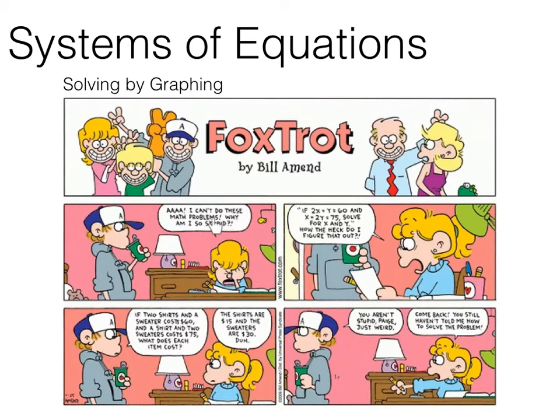I can't do these stupid math problems. If 2x plus y equals 60 and x plus 2y equals 75, solve for x and y. How the heck do I figure that out? This is her brother. If two shirts and a sweater cost $60 and a shirt and two sweaters cost $75, what does each item cost? The shirts are $15 and the sweaters are $30. Duh.